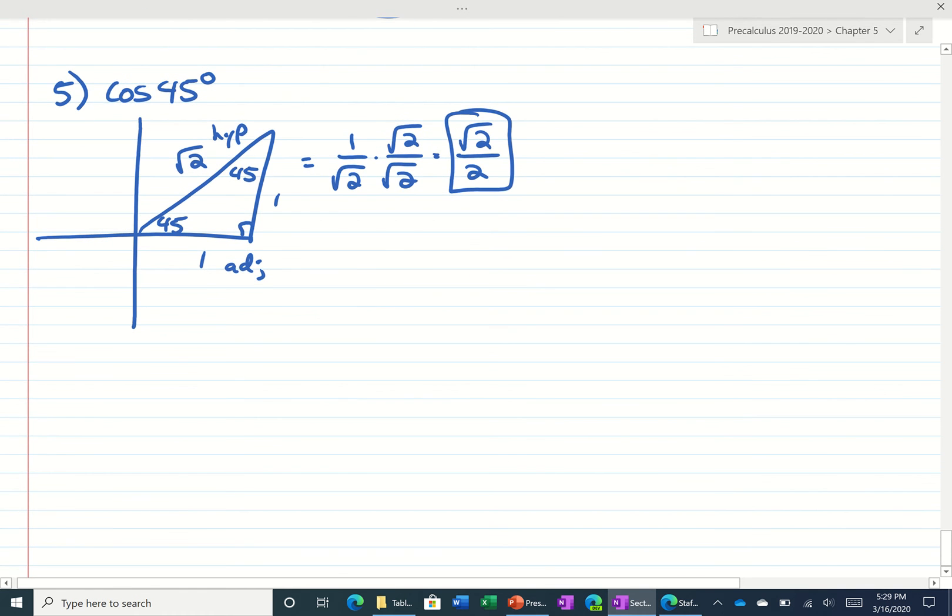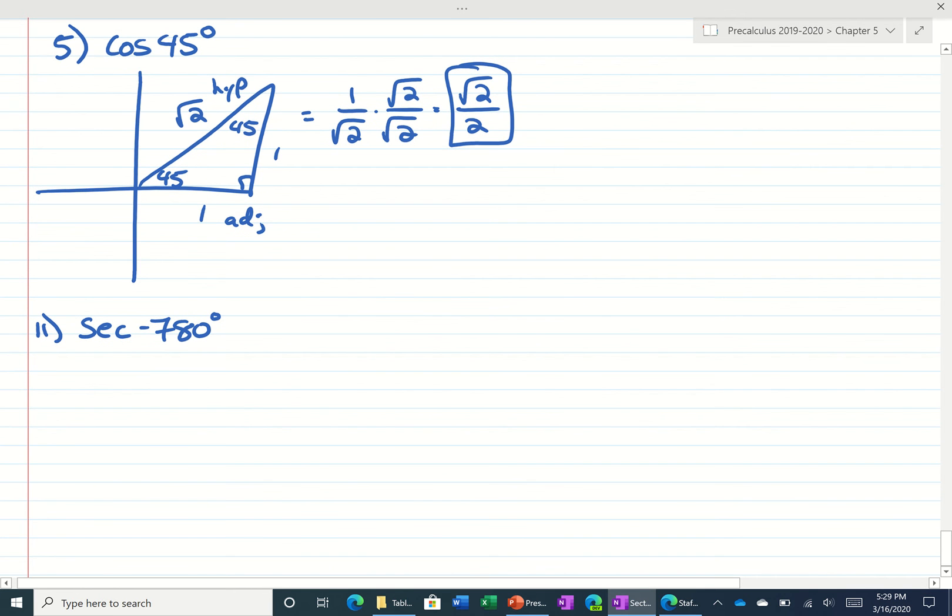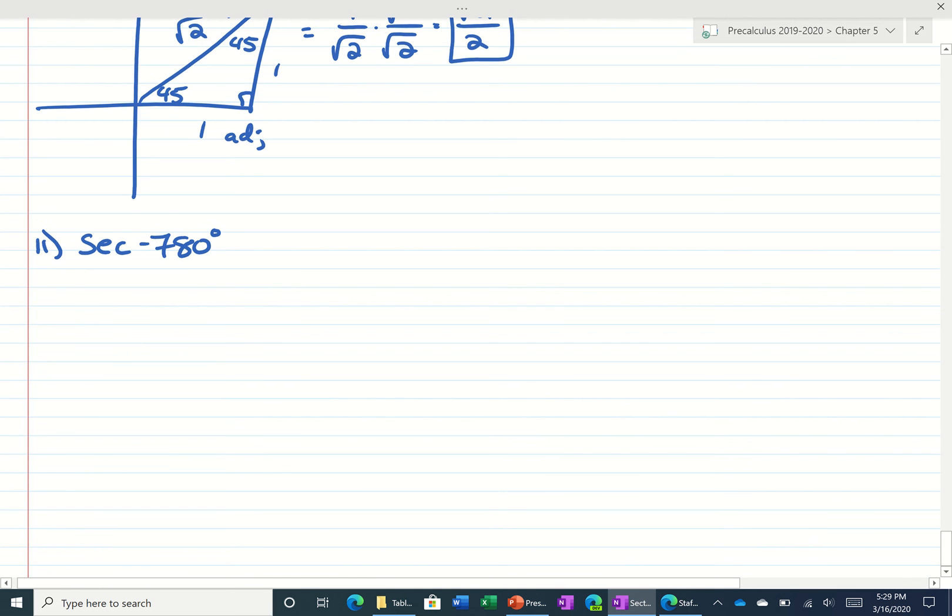I'm going to go down to secant of negative 780. Now that's a big number, but I have a few guys that could probably lift about 780 pounds in class. So let's see where that is. It's negative, so we're going this way. Negative 90, 180, 270, 360, 450, 540, 630, 720.